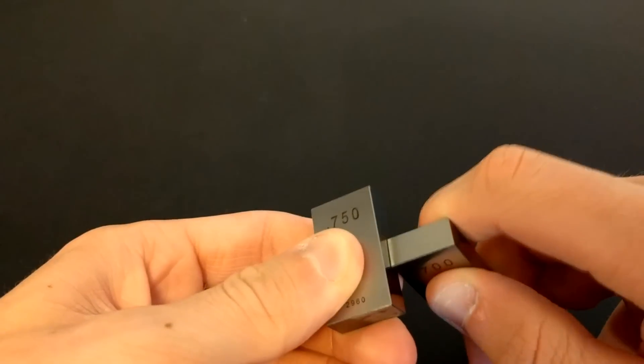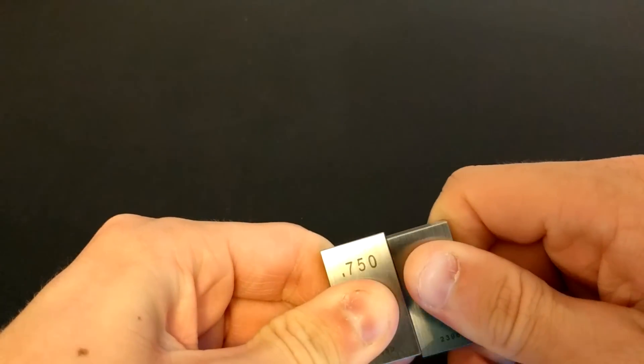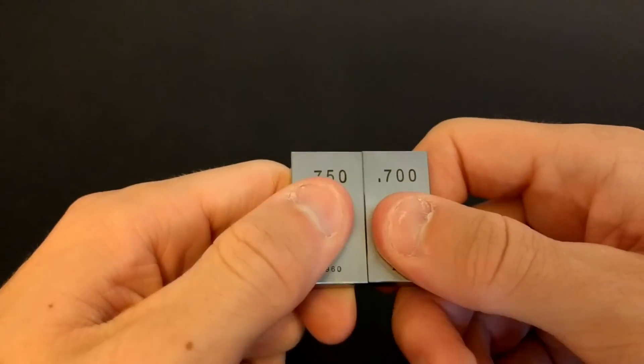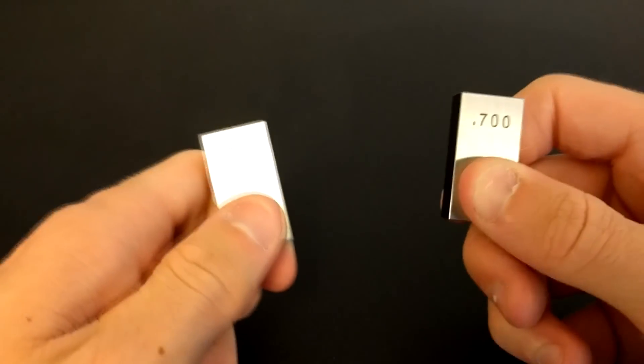However, if I slide them together like this, they stick together like super magnets. They are clearly stuck together and I can't even pull them apart. If I twist them apart, they'll go back to being separate pieces of non-magnetic metal. What's happening?